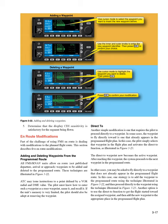Direct to: another simple modification is one that requires the pilot to proceed directly to a waypoint. In some cases, the waypoint to fly directly toward is one that already appears in the programmed flight plan — the pilot simply selects that waypoint in the flight plan and activates the direct-to function. The direct-to waypoint now becomes the active waypoint; after reaching this waypoint, the system proceeds to the next waypoint in the programmed route. In other cases, you may be asked to fly directly to a waypoint that does not already appear in the programmed flight route — one strategy is to add the waypoint to the programmed route and then proceed directly to it, or use the direct-to function to get started toward the assigned waypoint and then add the new waypoint to the appropriate place in the flight plan.